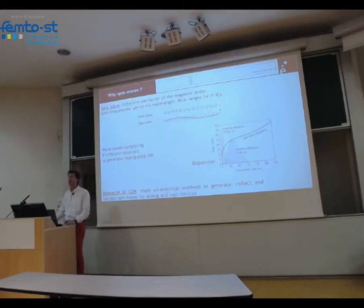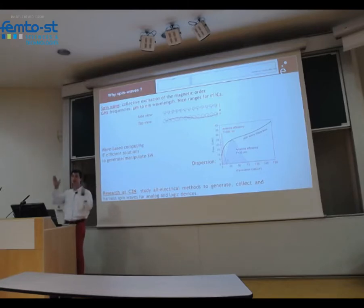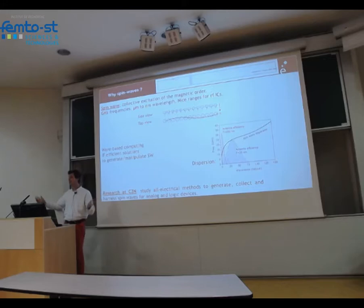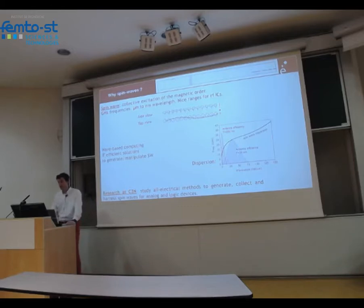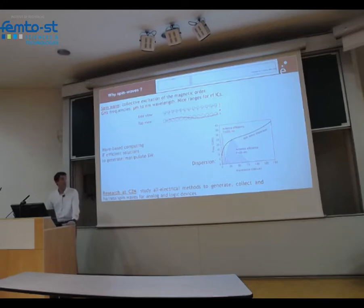Spin waves are the collective excitations of a ferromagnetic body. In a ferromagnetic body the spins are parallel to each other, and if you excite the magnetization it creates an excitation that propagates in space and time — the spin wave, the elementary excitation. Spin waves are interesting for integrated circuits because they have gigahertz frequency, typically from 1 to 100 gigahertz, depending on the magnetic materials and configurations.